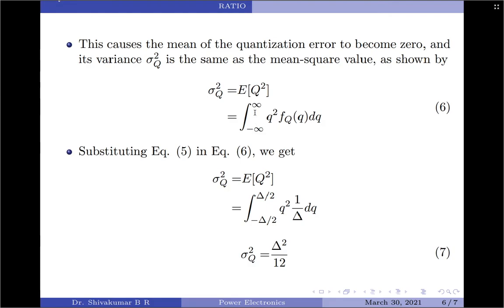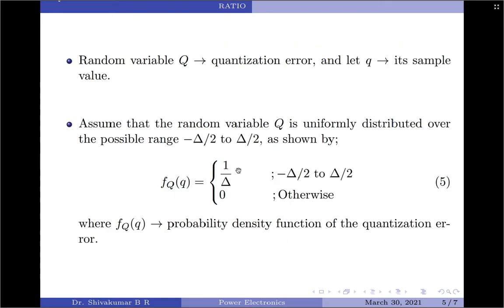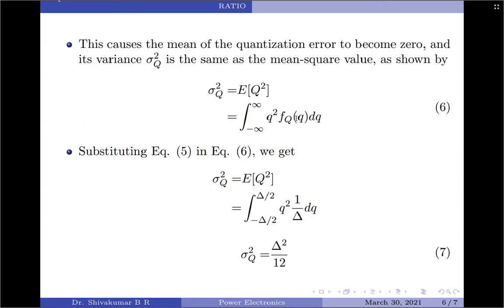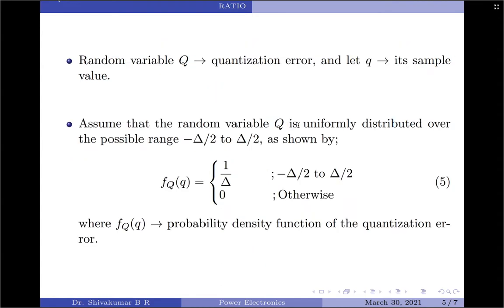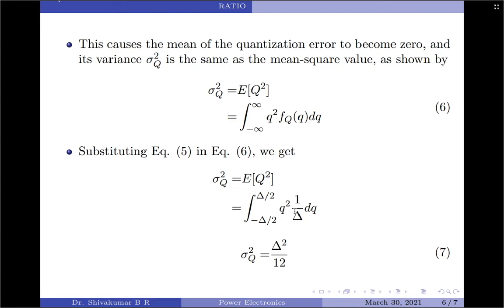The variance equals the mean squared value, so we write it as the expectation of Q squared, which equals the integral from minus infinity to plus infinity of q squared times f_Q(q) dq. Substituting equation 5, the limits convert to minus delta by 2 to plus delta by 2, and f_Q(q) equals 1 by delta. Since 1 by delta is constant, integrating q squared gives q cubed divided by 3. Applying the limits and simplifying, the variance of the quantization error is delta squared divided by 12.